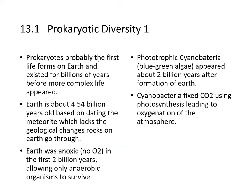Prokaryotes were probably the first life forms on Earth, existing for billions of years before more complex life appeared. Earth is about 4.54 billion years old based on dating of meteorites. At one point the Earth was anoxic — no O2 — for the first two billion years, which allowed only anaerobic organisms to survive.